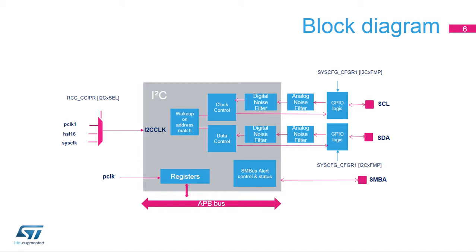The peripheral has an independent clock domain, which allows a communication baud rate independent from the system clock. Here is the I2C block diagram. The registers are accessed through the APB bus, and the peripheral is clocked with the I2C clock, which is independent from the APB clock. The I2C clock can be selected from among the system clock (SYSCLK), the high-speed internal 16 MHz RC oscillator clock (HSI-16), and the APB-1 clock (PCLK-1).